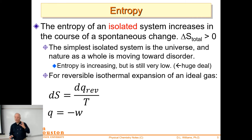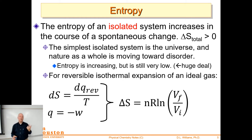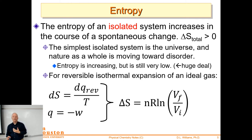For a reversible process, entropy is calculated by taking the heat and scaling by temperature: ΔS = q_rev / T. Combining that with q = -W for an isothermal process, we get the entropy change for isothermal reversible expansion: ΔS = nR·ln(V_final/V_initial). Notice temperature is absent because we divided by it, and the negative sign is gone because heat is negative work.